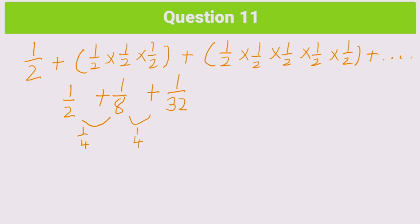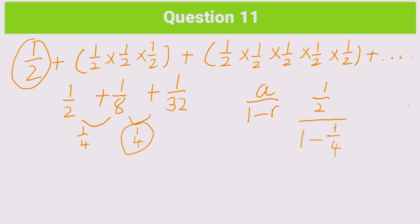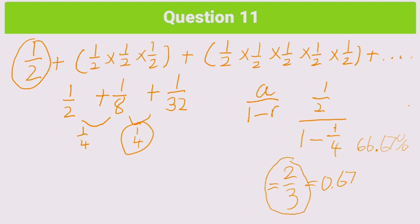To solve this, we use the sum to infinity formula for geometric series: a over one minus r. Our first term a is a half, and our r value is a quarter. So that's one over two, all over one minus one over four. Plugging that into the calculator gives an answer of two thirds. So the answer is two thirds, also written as 0.67 or 66.67%. In any game with a 50% chance per event, the person going first has double the chance of winning: two thirds versus one third for the person going second.